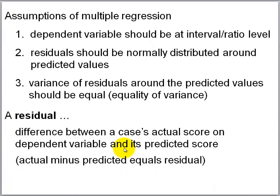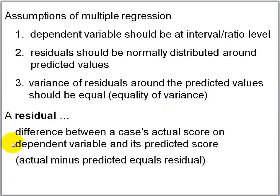The assumptions of multiple regression include: the dependent variable should be at the interval-ratio level of measurement; residuals should be normally distributed around predicted values — that is, around the regression line; and the variance of residuals around the predicted value should be equal — the equality of variance assumption. A residual is the difference between a case's actual score on the dependent variable and its predicted score, sometimes also called error.